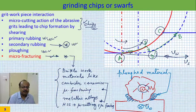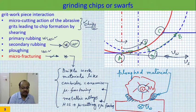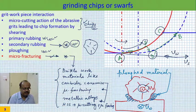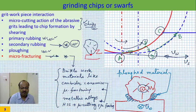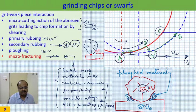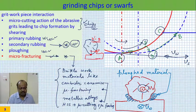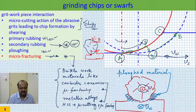Now what is secondary rubbing? Secondary rubbing takes place from D' to B. So if this is your grit, at the grit tip when chip formation is taking place, simultaneously at the grit tip secondary rubbing would also take place. So chip formation occurs here and simultaneously secondary rubbing takes place in the same zone from D' to B. That is also something like primary rubbing but associated with energy consumption, and since micro cutting takes place, chip formation also takes place.